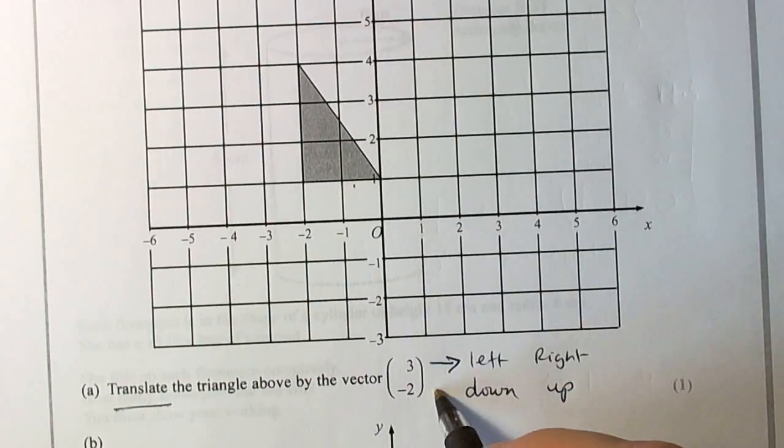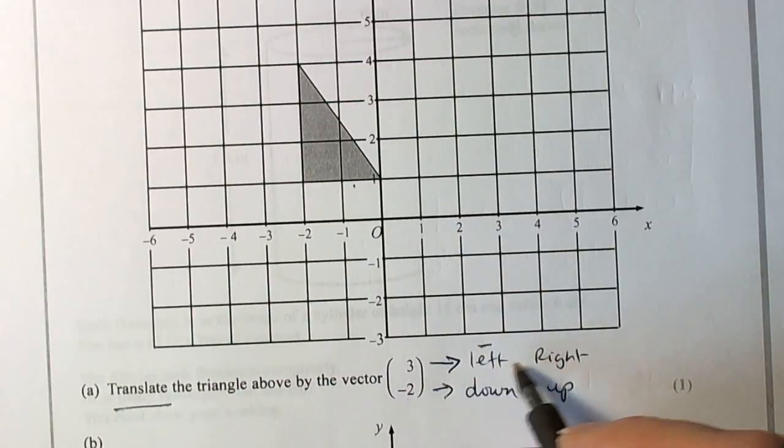So basically we've got to realize that the top number, if it was negative, then we go left. If it was positive, we go right. If the bottom number is negative, we go down. And if it's positive, then we go up.